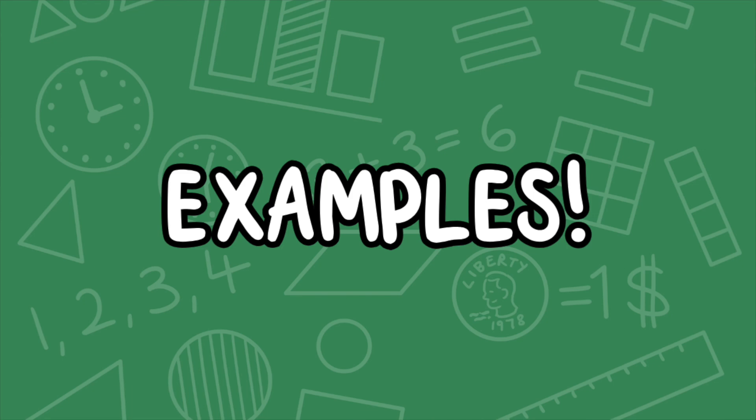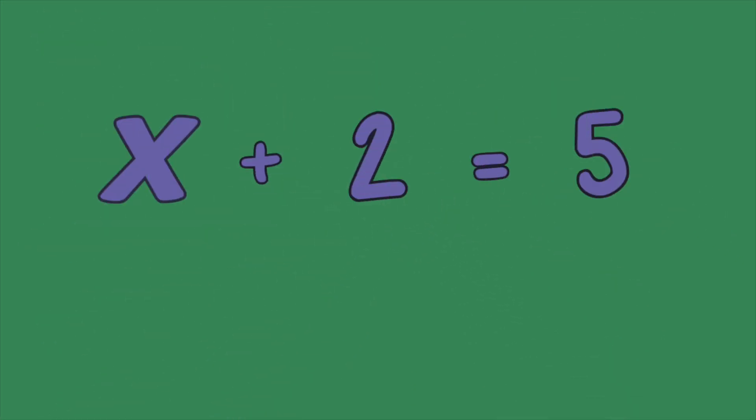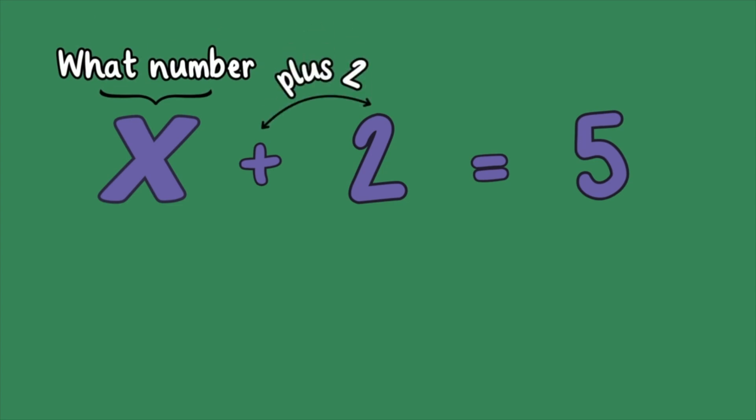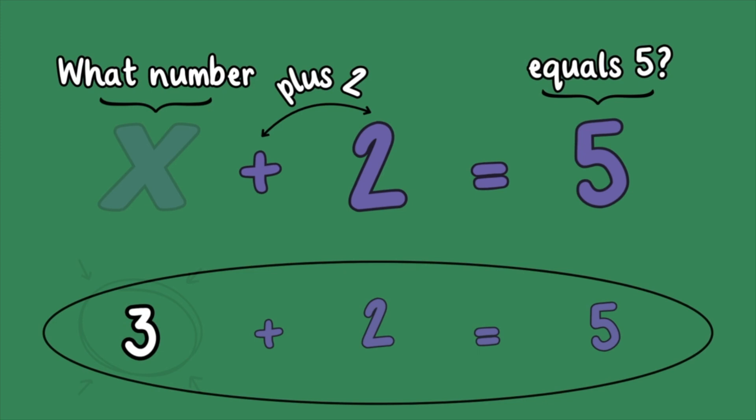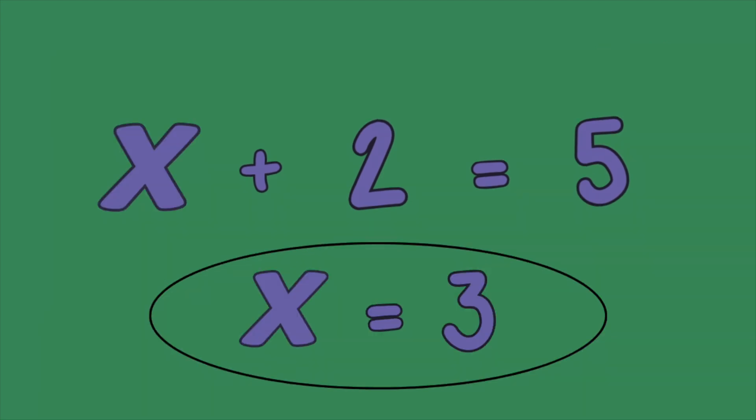Here's an example. x plus 2 equals 5. We ask, what number plus 2 equals 5? If you guessed 3, you're right, because 3 plus 2 equals 5. So x equals 3.